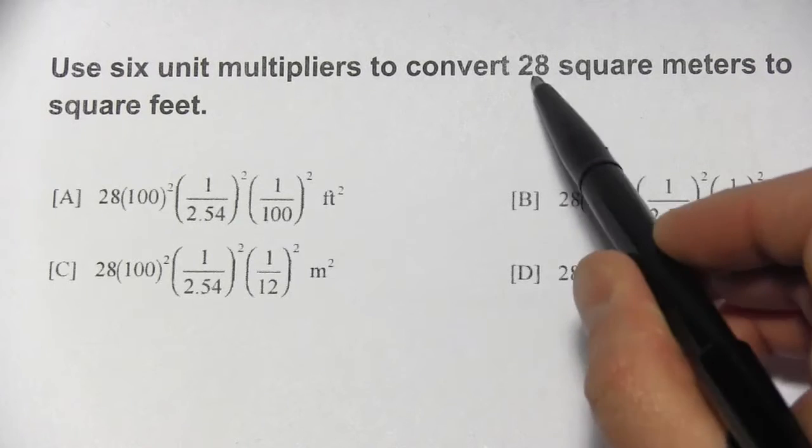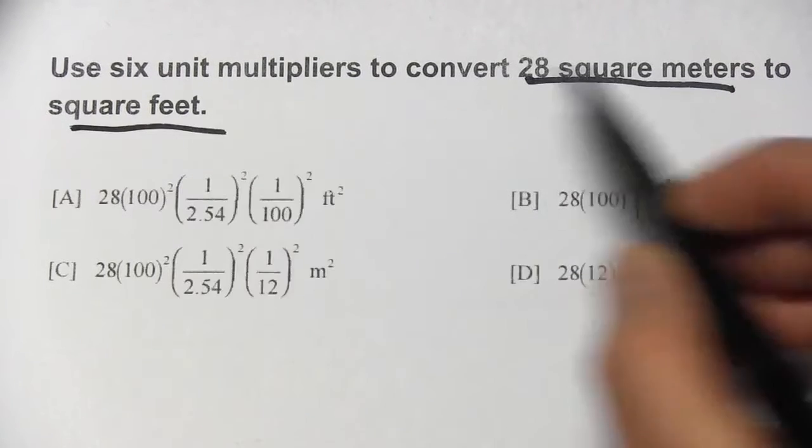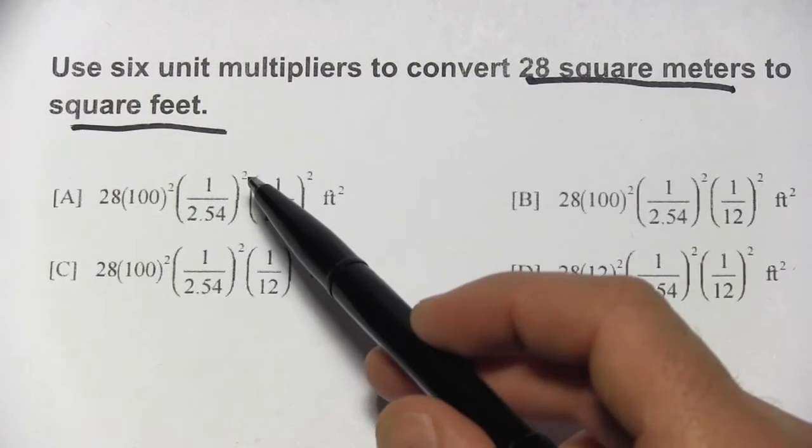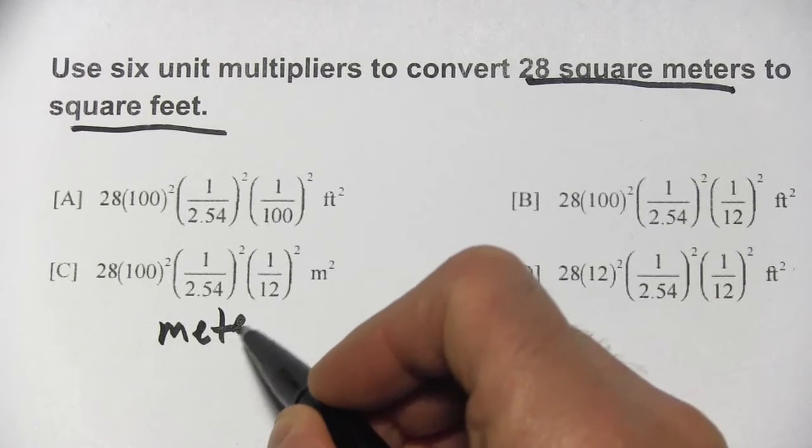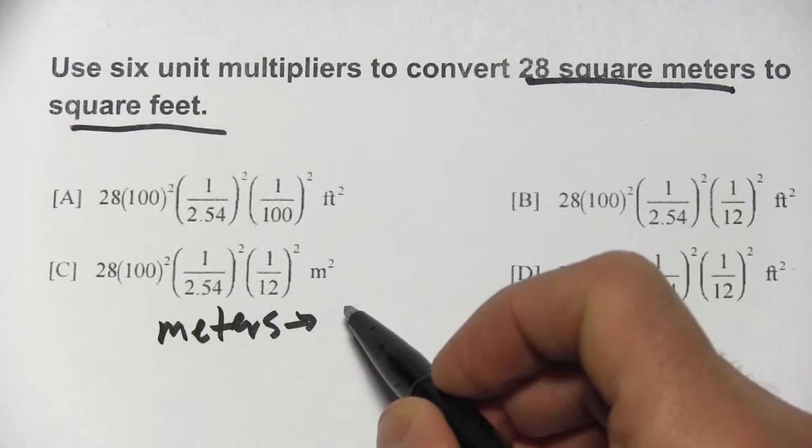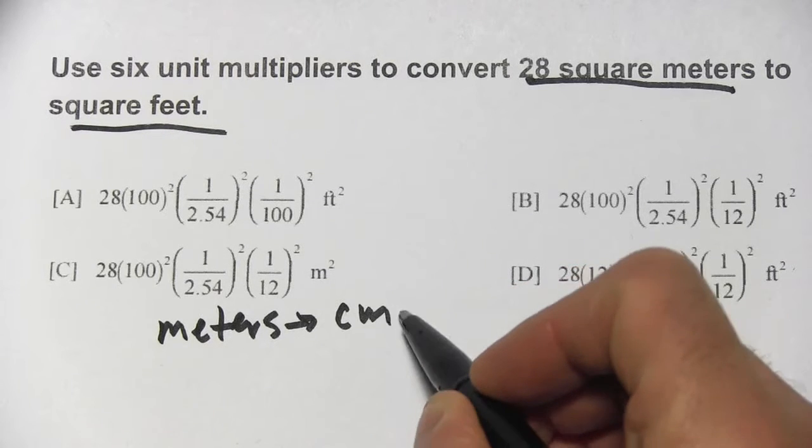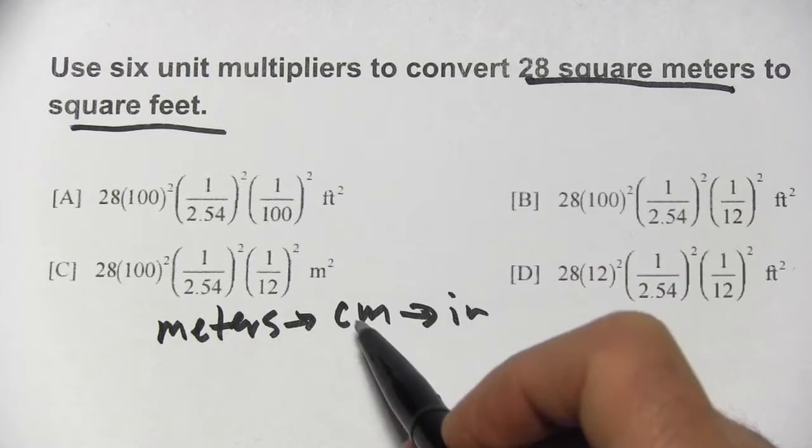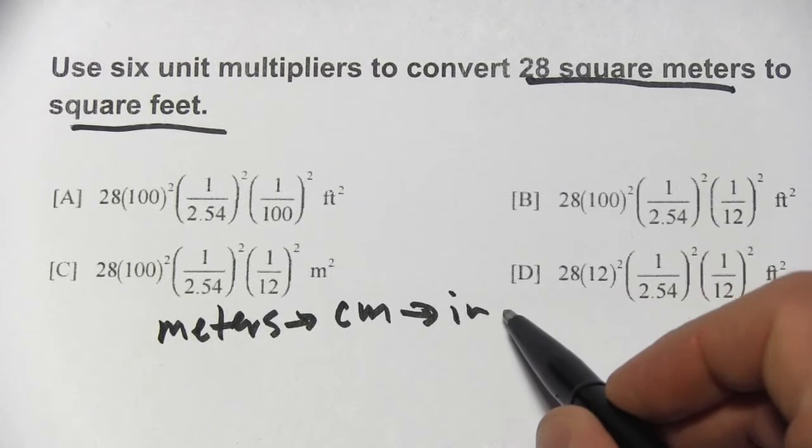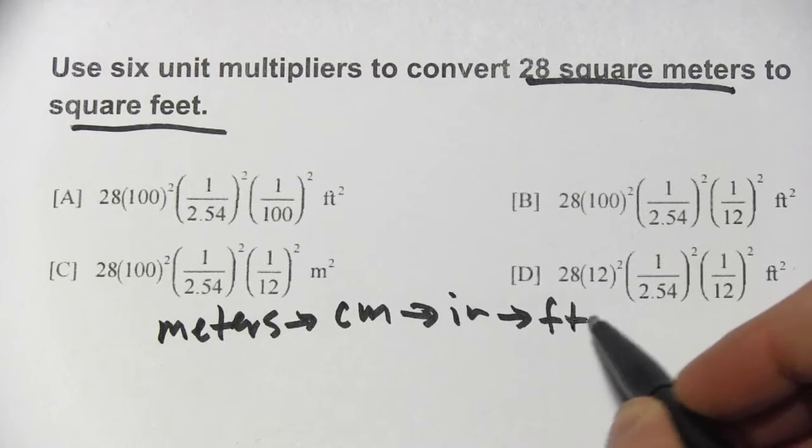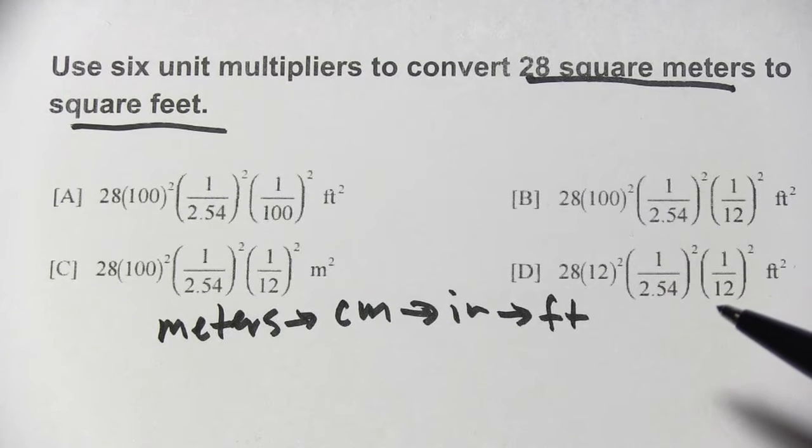So we want to go from square meters to square feet. We've got to get from the metric to the English. I think the best route for this is to go from meters to centimeters to inches. So I know how to convert from centimeters to inches. That's 2.54. And then from inches to feet. I think that's the best route for us.